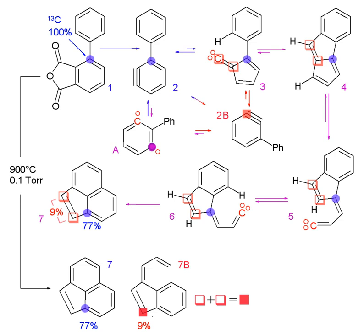Isotope tracers are commonly used in the form of isotope ratios. By studying the ratio between two isotopes of the same element, we avoid effects involving the overall abundance of the element, which usually swamp the much smaller variations in isotopic abundances.